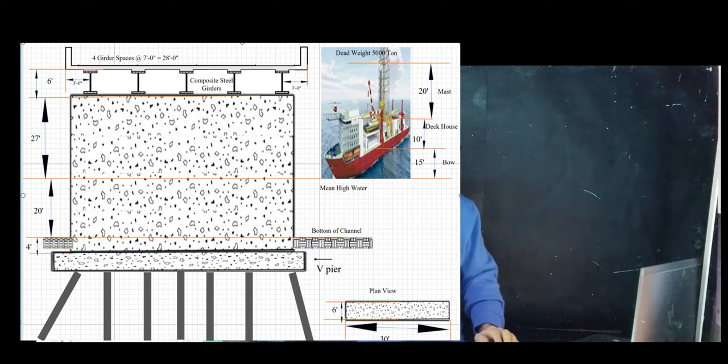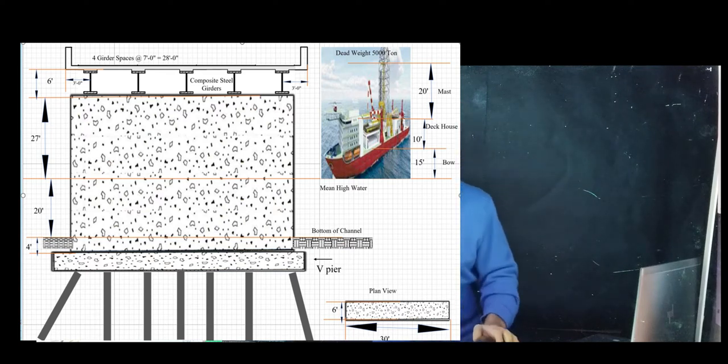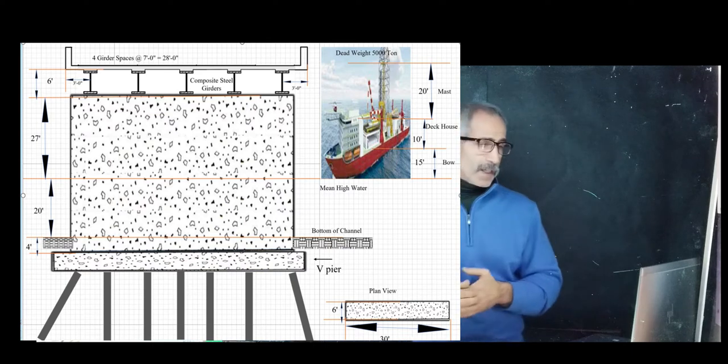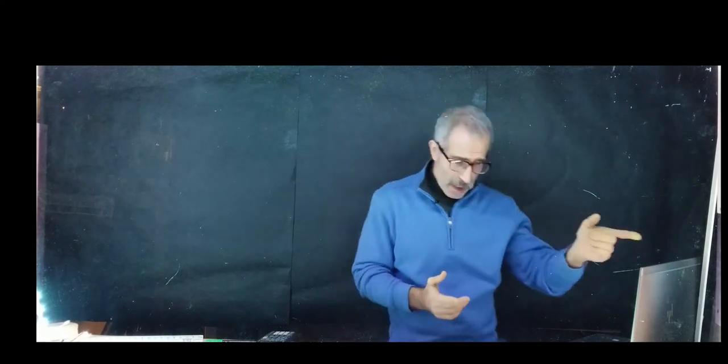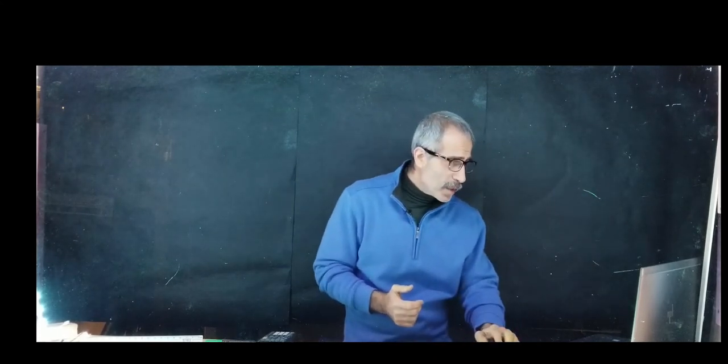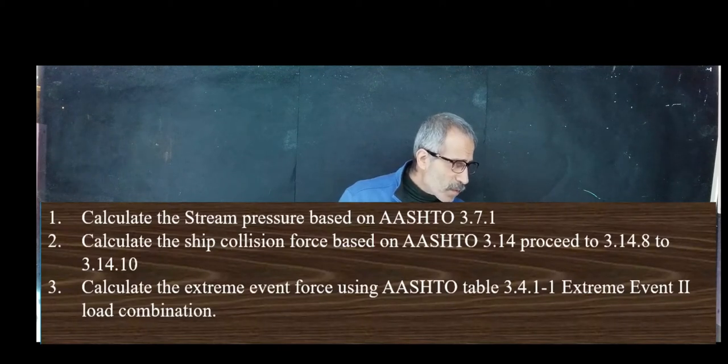In order for us to calculate these, the first thing we're going to do is calculate the stream pressure. We're going to use the AASHTO 3.7.1 as we've done before. Let me bring that on the board.